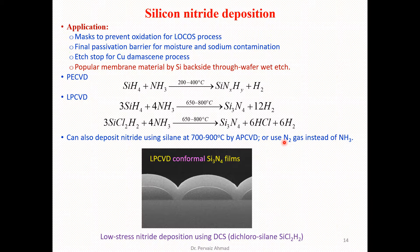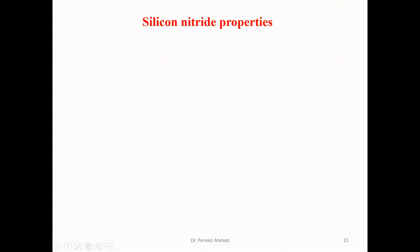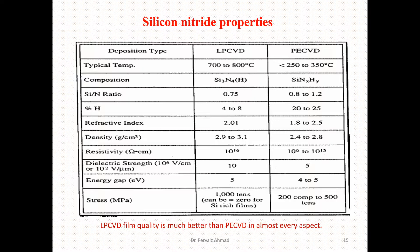At higher temperatures, nitrogen can be decomposed into atomic nitrogen, which reacts with silicon to form silicon nitride. The film obtained contains low stress. By using dichlorosilane (DCS), we can achieve less-stress nitride deposition. The properties of silicon nitride films are summarized in a table comparing LPCVD and PECVD techniques.